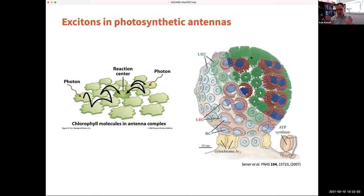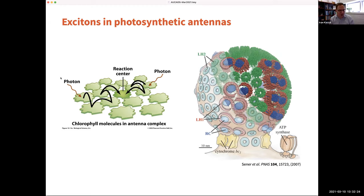Here's what a photosynthetic antenna looks like. This is an example of the light harvesting apparatus of purple bacteria. You've got reaction centers in blue — this is where the excitons want to get to. But in order to harvest as much light, they're surrounded by antenna complexes in red and green. Photons come in, are absorbed by peripheral antenna pigments, then hop around until they reach the reaction center where they can drive charge separation and be converted into chemical fuels.